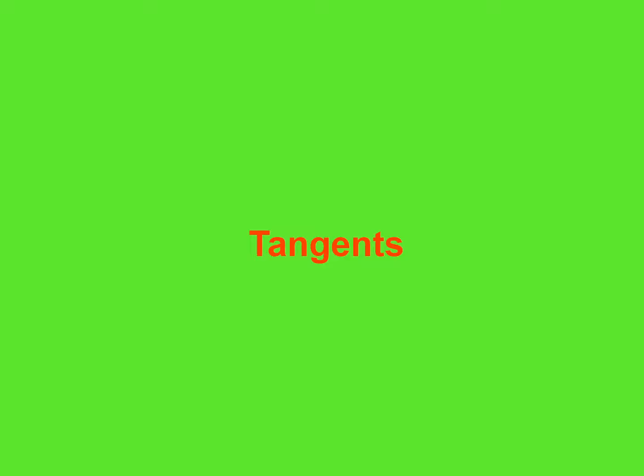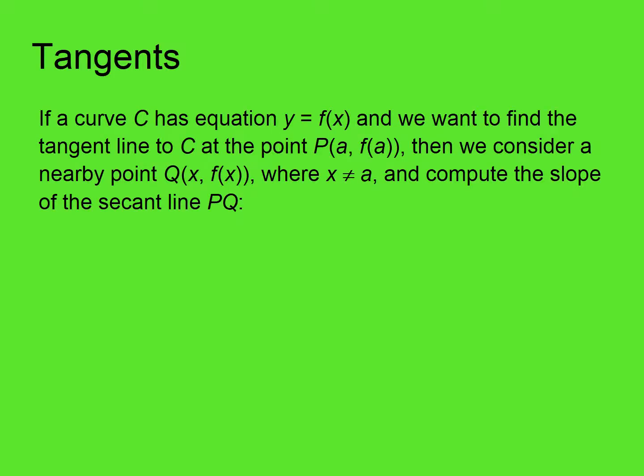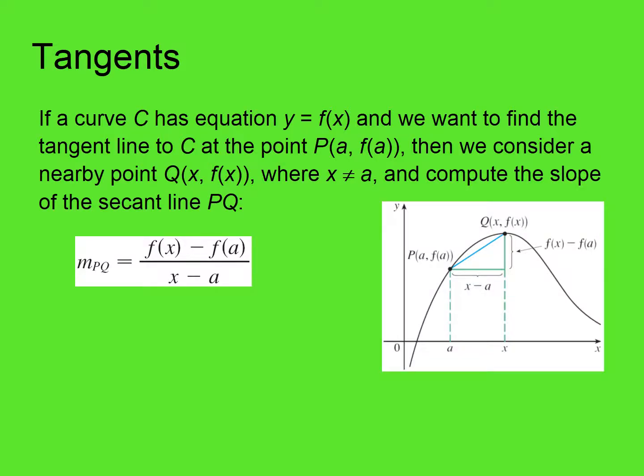Our objective on tangents is that the student understands the idea of the tangent line, which is central to differential calculus. If a curve C has equation y = f(x) and we want to find the tangent line to C at a point P with coordinates (a, f(a)), then we consider a nearby point Q with variable coordinates (x, f(x)), where x is not equal to a, and compute the slope of the secant line PQ. Here's P, here's Q — the blue segment is part of the line PQ.